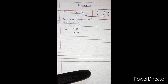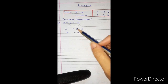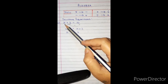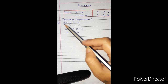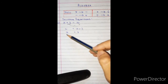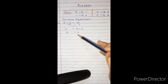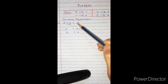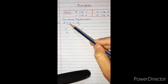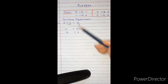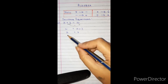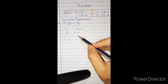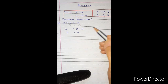Let us check whether 7 is correct. If x is 7, then 7 + 3 = 10. Yes, 7, 8, 9, 10 — the equation checks out and our answer is correct.